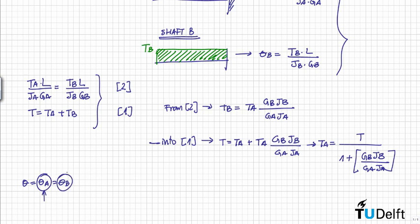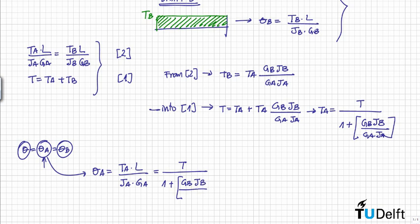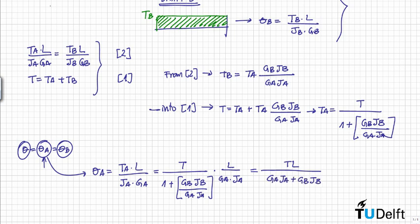Since the rotation angle theta equals theta A equals theta B, it is enough to use TA to calculate the total rotation angle. Theta A equals TA times L divided by J_A times G_A. We can rearrange this into a cleaner form, and this is the final result — the angle of rotation of shaft A, which equals the angle of rotation of shaft B, which equals the total rotation angle of the whole structure.